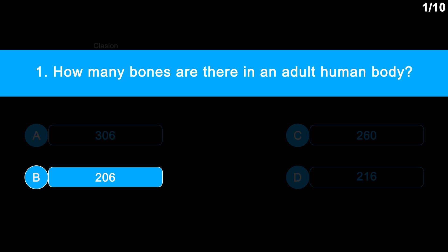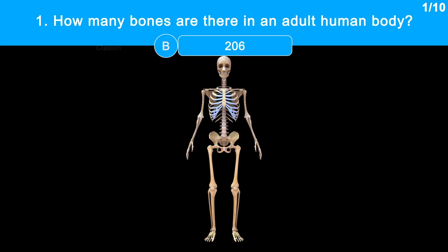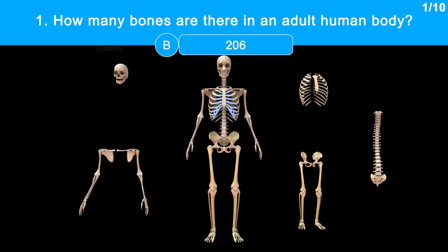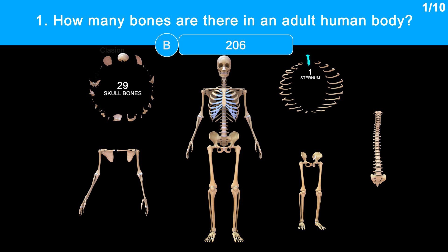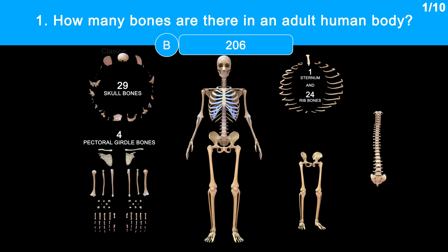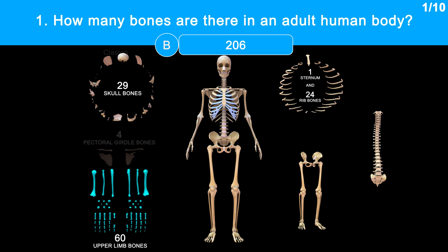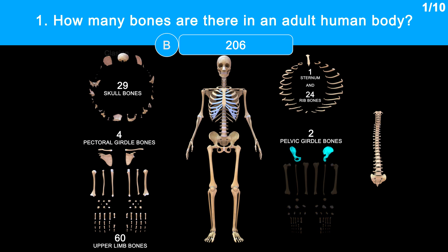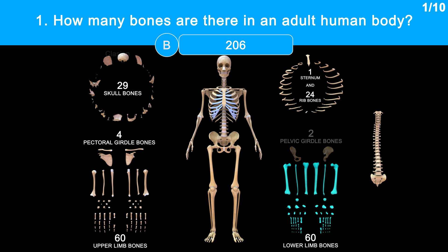The correct answer is option B, 206 bones. Let's count them. There are a total of 206 bones in the adult human body: 29 skull bones, 1 sternum and 24 rib bones, 4 pectoral girdle bones, 60 upper limb bones, 2 pelvic girdle bones, 60 lower limb bones, and 26 vertebral bones.